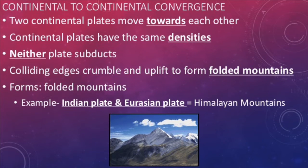The last type of convergent boundary is between two continental plates. Here, neither plate is denser, so we see the formation of folded mountains like the Himalayas. Both crusts push together and then upwards, but they don't shoot up forever. Gravity still exists, and it causes the mountains to crumble when they become too tall.